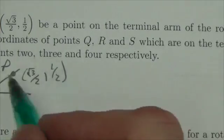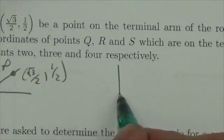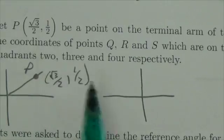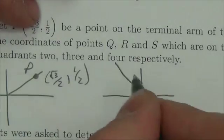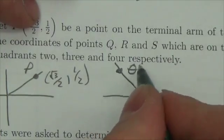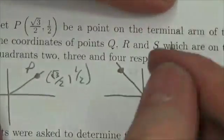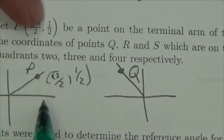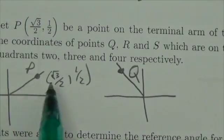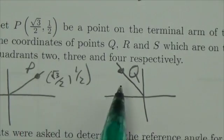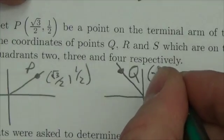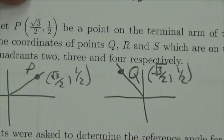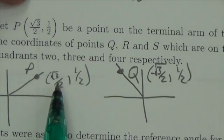What this is really asking us to do is take point P and reflect it into the second quadrant. It's gonna look like this — this will now be point Q. If I flip this over, it's gonna be the same point; the distances are the same, but instead of going to the right I'm going to the left, which makes our x coordinate negative. I'm still going up, so the coordinates of point Q would be negative root 3 over 2 comma 1 half.